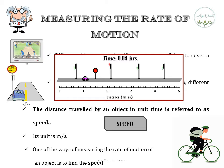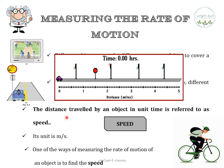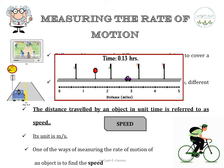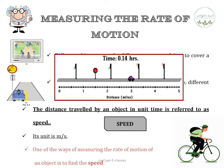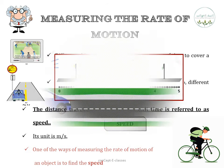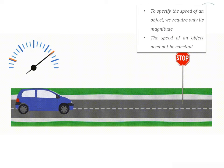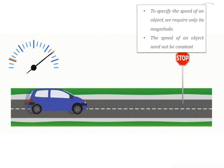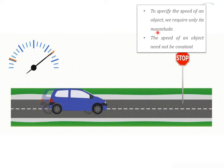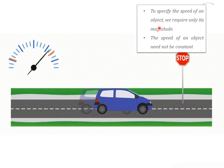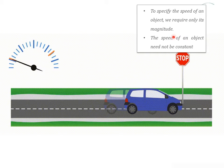What is speed? The distance travelled by an object in unit time is referred to as speed. Its unit is meter per second. One way of measuring the rate of motion of an object is to find its speed. To specify the speed of an object, we require only its magnitude — only its numerical value. We do not need the direction. So speed is also a scalar quantity.